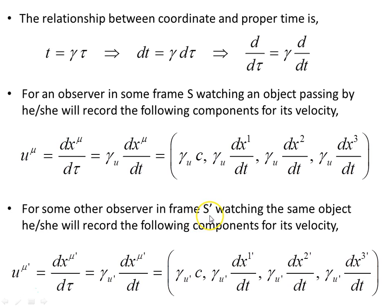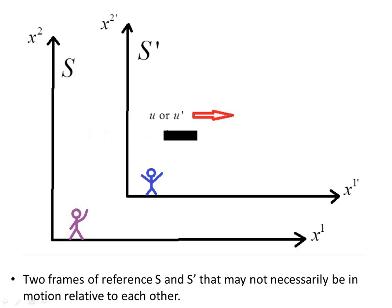For some other observer in frame S prime watching the same object, he or she records the same form of components, just primed: u prime^mu = gamma prime times the corresponding derivatives. Pictorially, the first observer in frame S sees the object going by with speed u, and the blue observer in S prime sees it going by with speed u prime. The two observers may be at different spatial locations or times, but their coordinate systems differ, so they ascribe different coordinates to the same object.